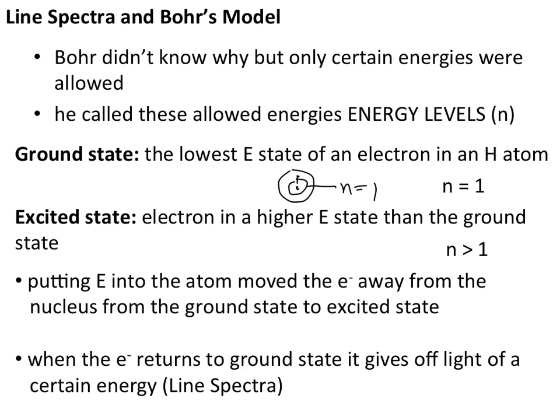To get into the excited state, you have to put energy into the atom — light or some energy source must be absorbed to get electrons to jump up into higher energy states. When those electrons drop back down to the ground state or a lower state, light is given off in the form of photons. For a specific single atom, only specific transitions are allowed — for example, n equals 2 to n equals 1, or n equals 3 to n equals 2 — giving unique specific transitions that lead to the line spectra.